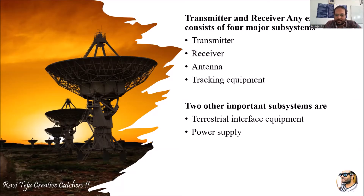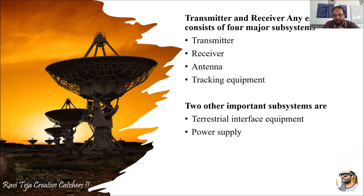The terrestrial interface equipment refers to the machinery or equipment located at earth stations in several parts — it can be on an aircraft, on land, or on a ship. Based on that, the equipment changes; you can't establish a huge equipment setup on an aircraft the same way as on land or a ship. The power supply is also a consideration — providing power to the earth system on a ship or aircraft is a challenging task, so we need to consider these two subsystems carefully.